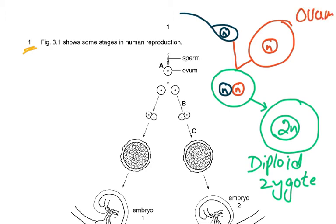The ovum is a haploid gamete — I've written 'n' for haploid number. The sperm also has n. When they fuse, the male and female gamete nuclei fuse and form the zygote — the one cell that is the beginning of every human being, every animal, every plant. It is a diploid zygote. Importantly, the cytoplasm of the zygote, including the mitochondria, comes from the ovum, not the sperm. That is why we have Eve's DNA — we all carry the mitochondria of Hazrat Hawa.